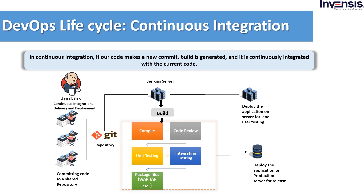Let me tell you in detail how this process works. Continuous integration is a programming process where developers need to commit changes to the source code multiple times a day or more often in a shared repository. Each commit is then built in the repository, making it easier for teams to detect problems early. Let us consider a scenario to know how Jenkins works. The developer commits code to the repository, and the Jenkins server periodically scans for changes. The Jenkins server detects changes and pulls them to plan a new build.